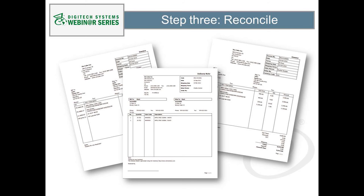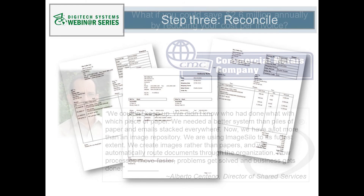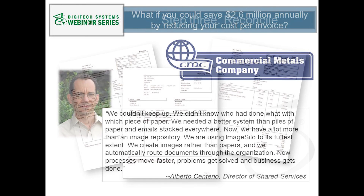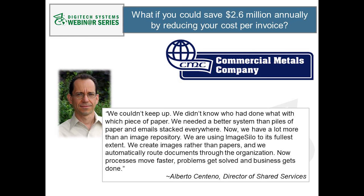So what should you look for in your reconciliation capabilities? Two things are important: the ability to view multiple documents side-by-side, and the ability to integrate the document management application with other line-of-business applications, such as inventory management and accounting software. This allows you to run a single search for all related information from multiple systems that returns records and information into a single interface for comparison.